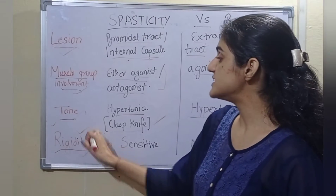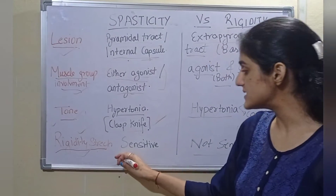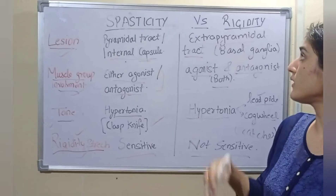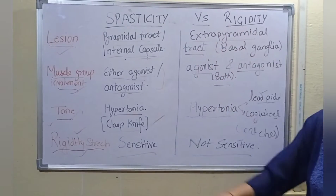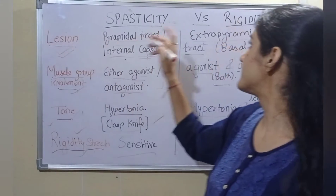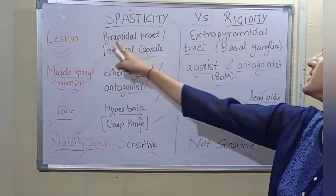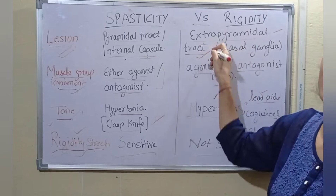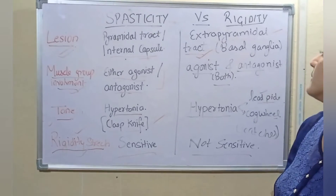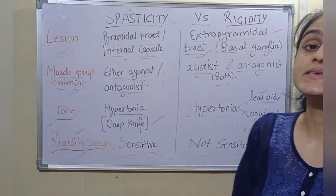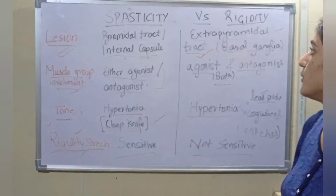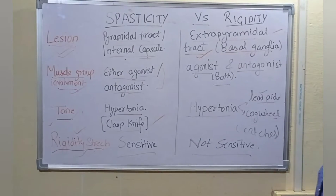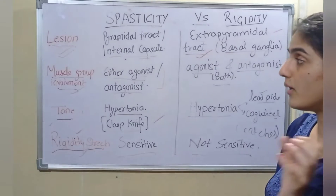Now if we talk about rigidity, the lesion is on the extrapyramidal tract — specifically the basal ganglia. A classical example of this is Parkinson's disease, because in Parkinson's the basal ganglia is affected and rigidity is reported.